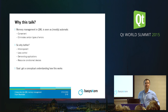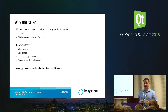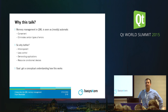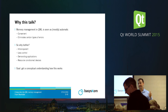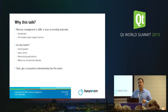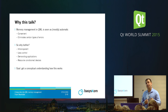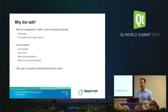Why this talk? Memory management in QML is seen as something that is mostly automatic — it's convenient, it's easy to use, and it might even eliminate certain types of errors. So why bother at all? This convenience has, on the flip side, the effect that it adds a certain intransparency, and there's less direct control for the application developer. This can become a problem if you are developing for a resource-constrained device or have a demanding application. It can be interesting to have a conceptual understanding of how this works internally so you make the right decisions for your software and system architecture.